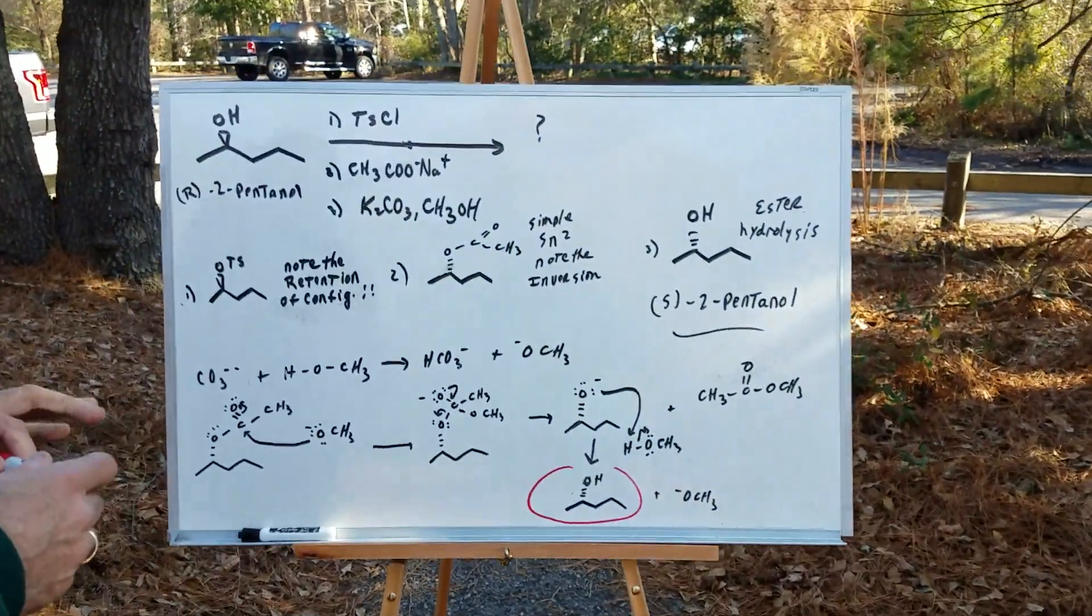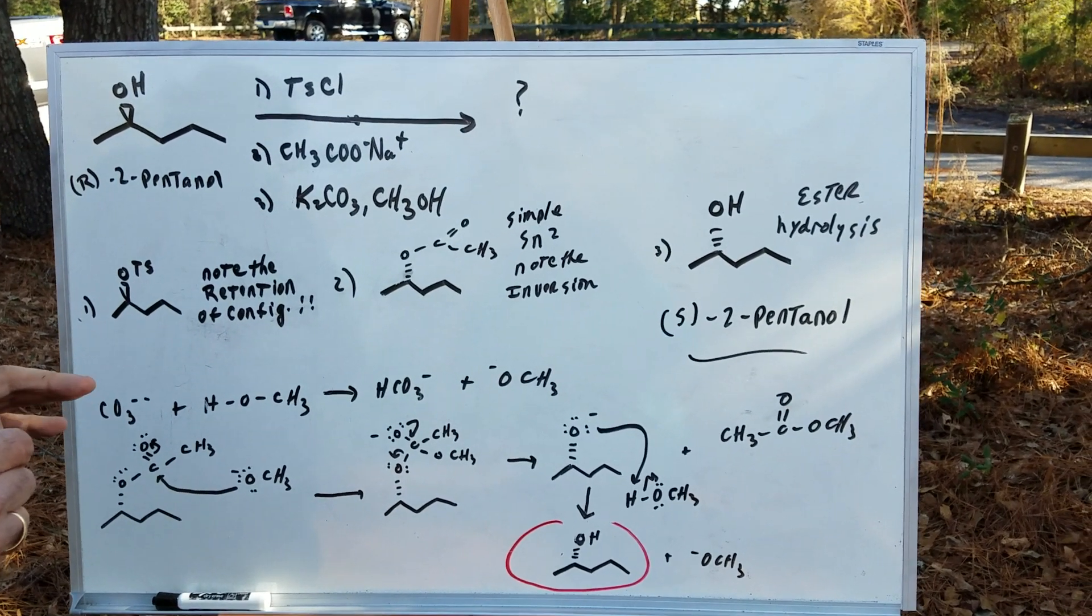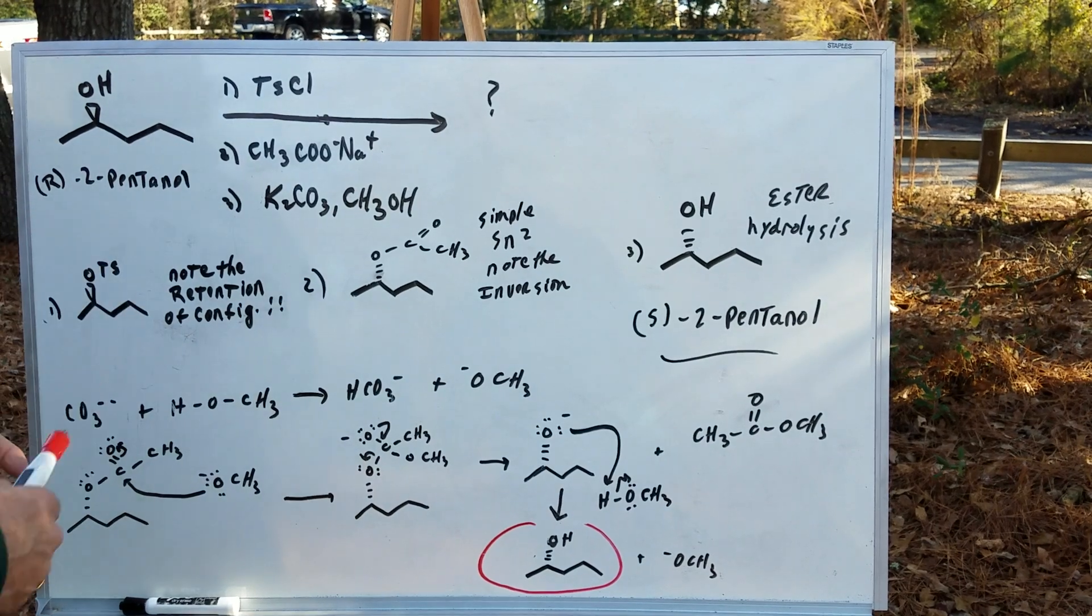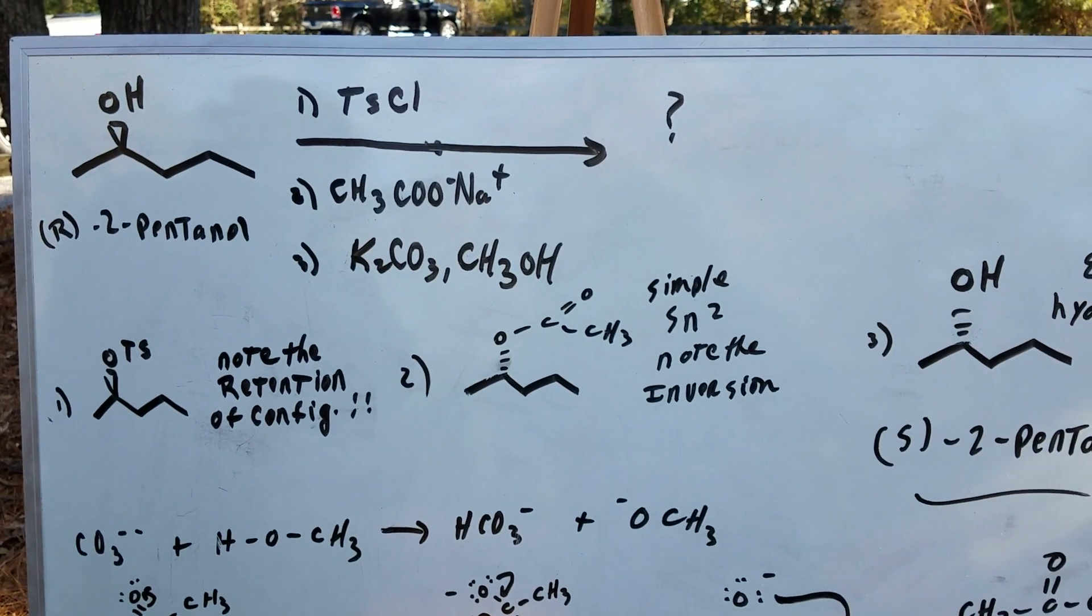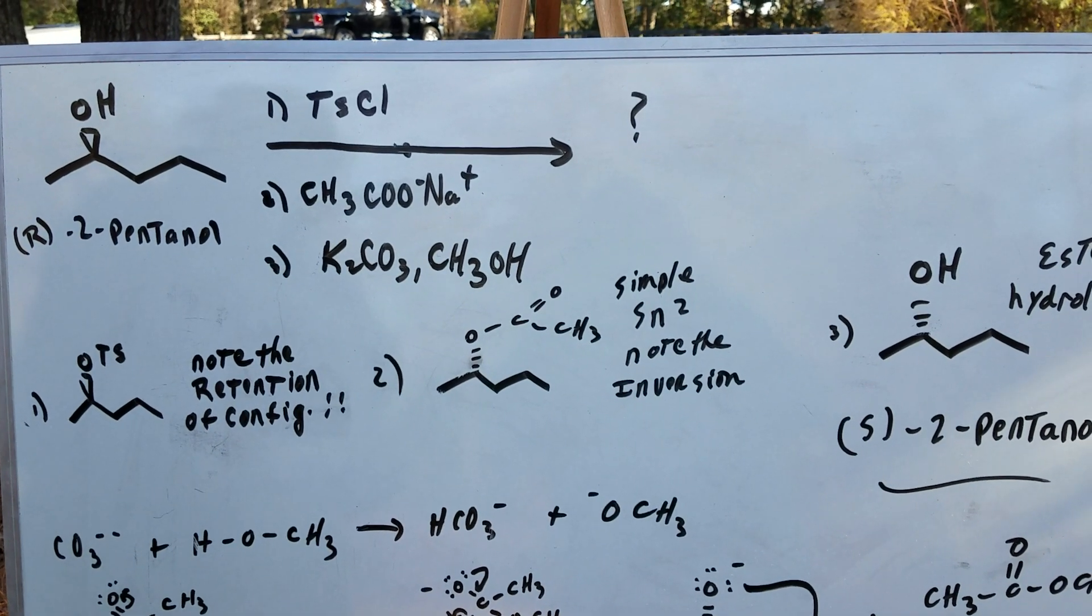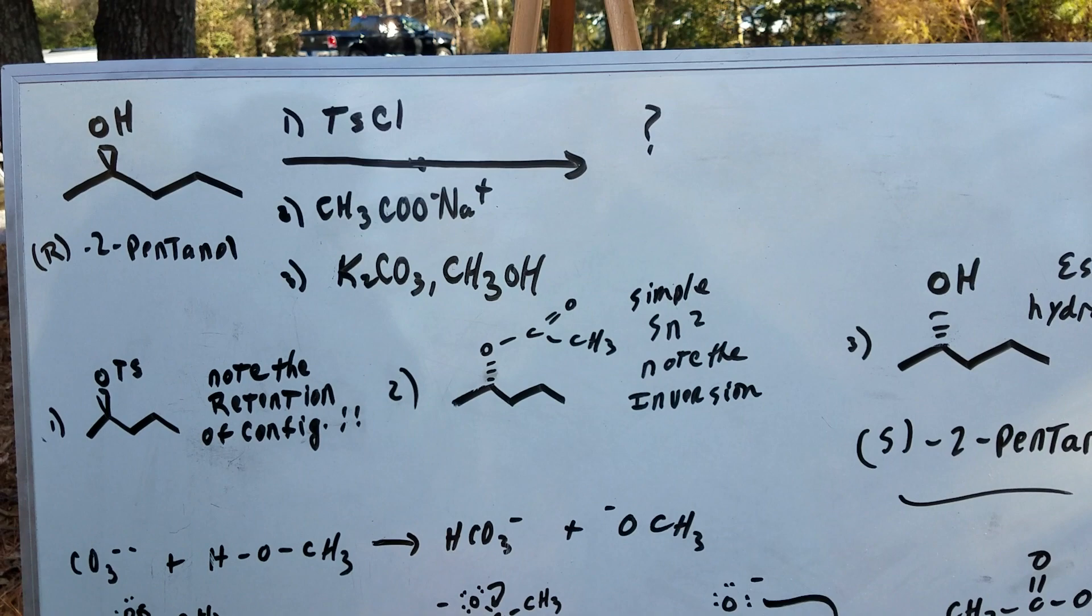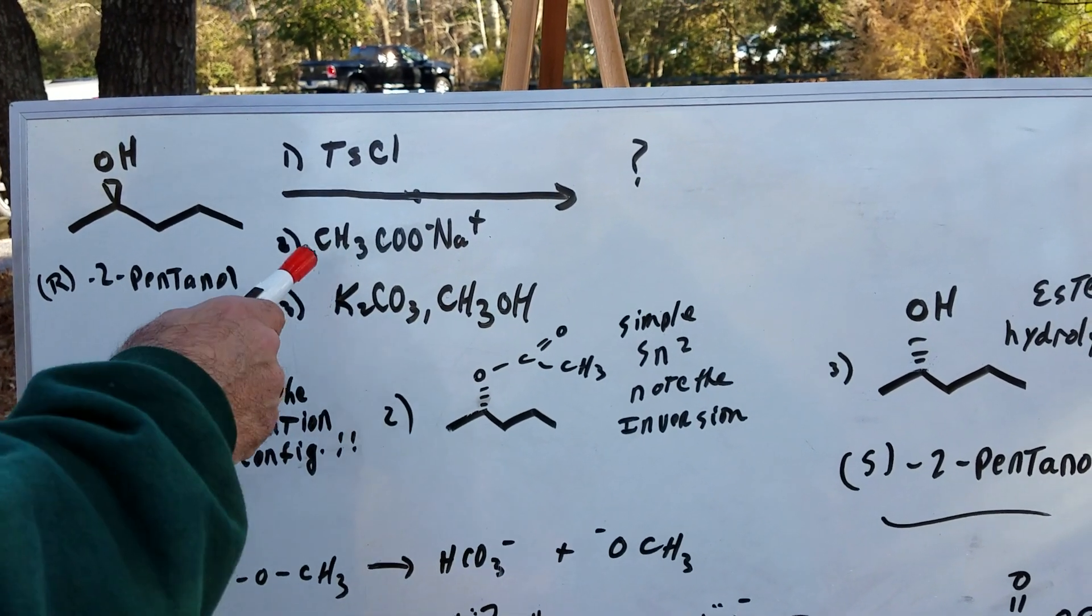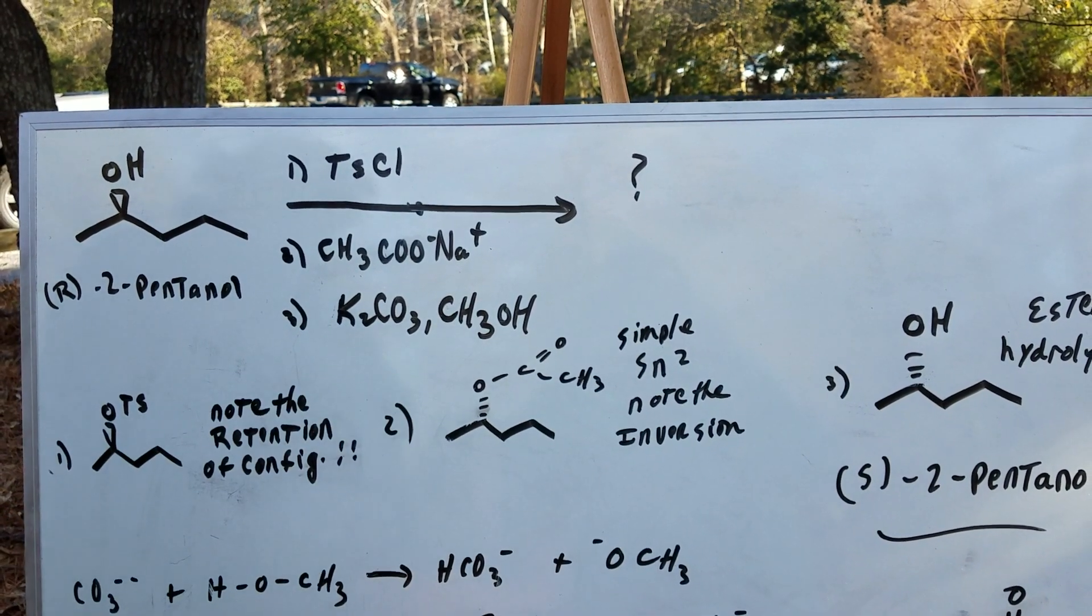Okay, Dr. Romano. Instead of doing a Mitsunobu reaction, which you probably don't need to know for the DAT exam, we're going to do a three-step procedure. We're going to first treat this starting compound, which makes sure you're clear that this is R-2-pentanol. Make sure you're clear on the stereochemistry. I'm going to treat the starting material with tosyl chloride, then the second step with sodium acetate, and then potassium carbonate and methanol.